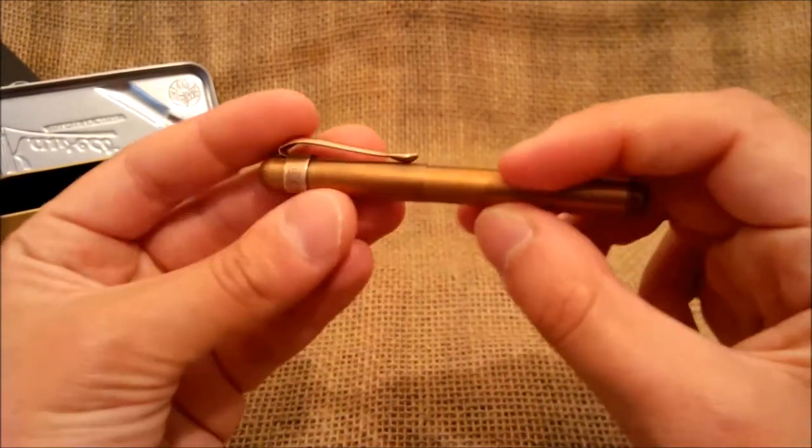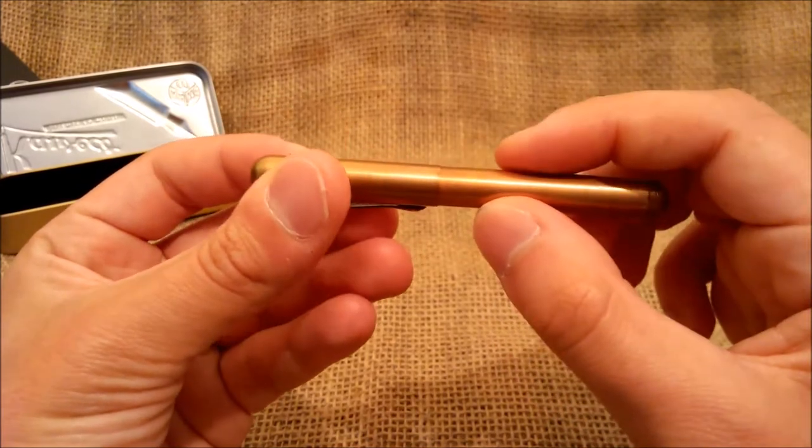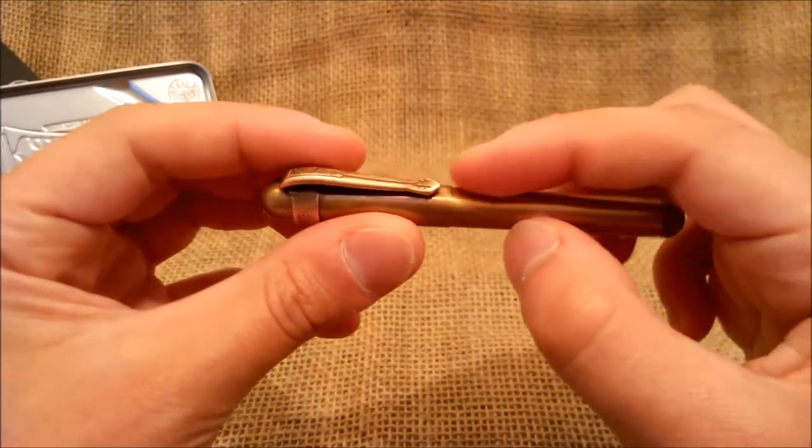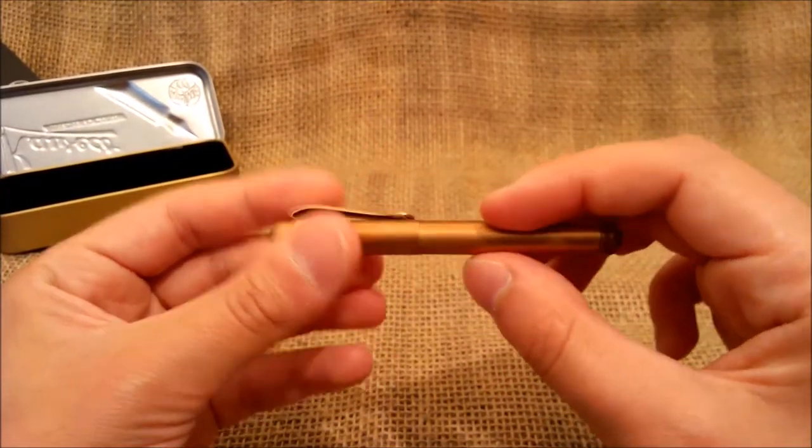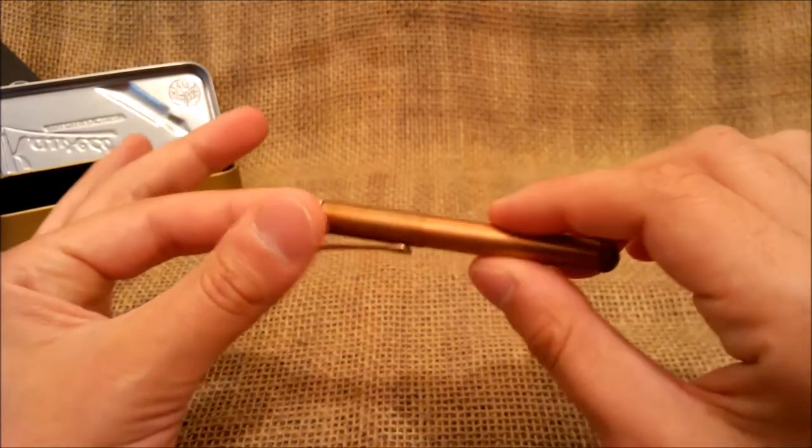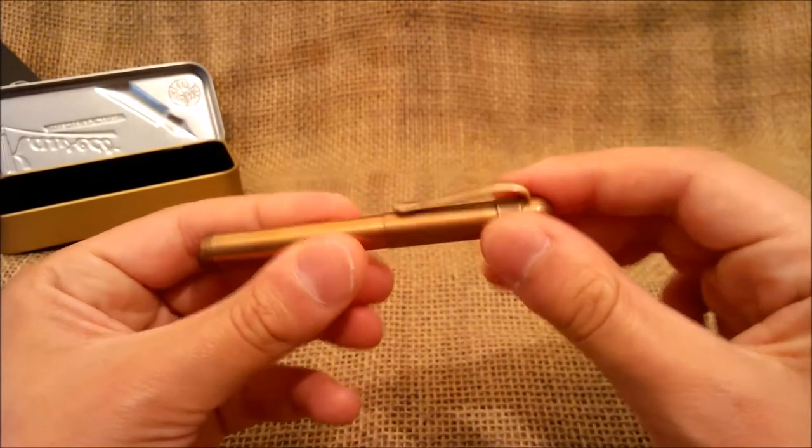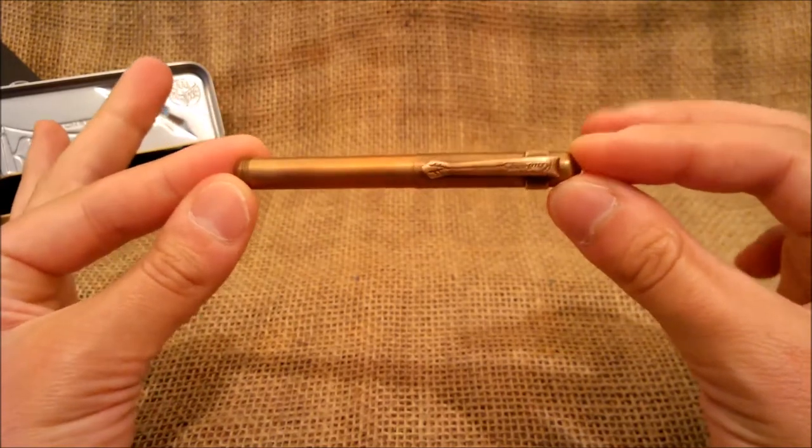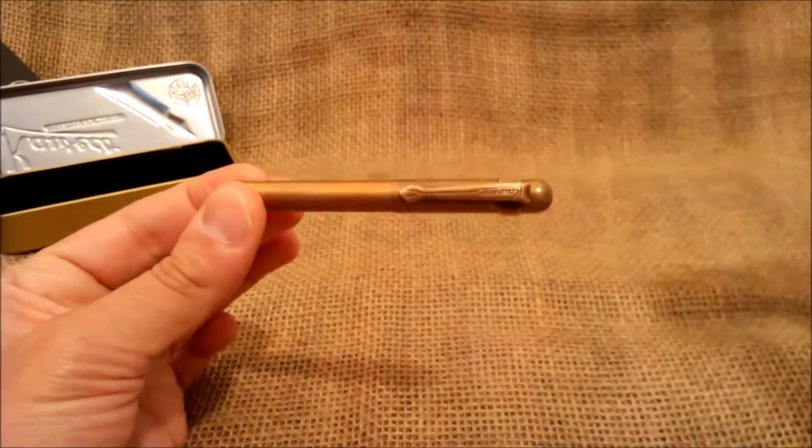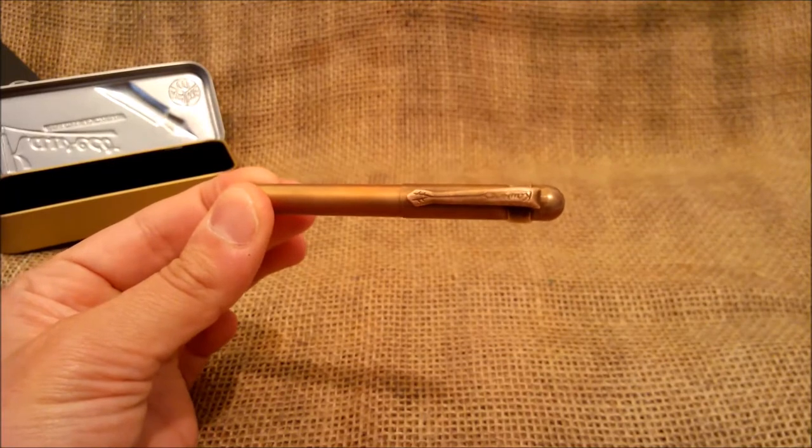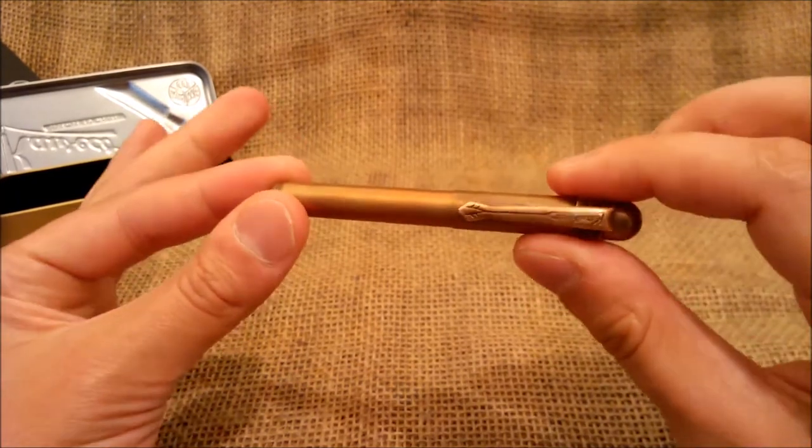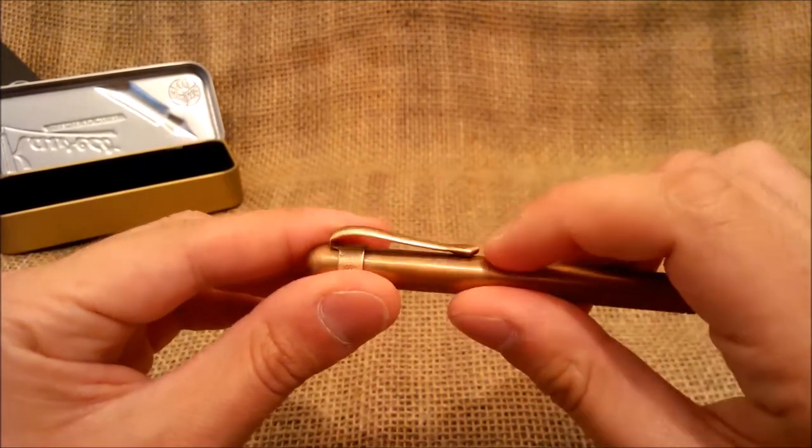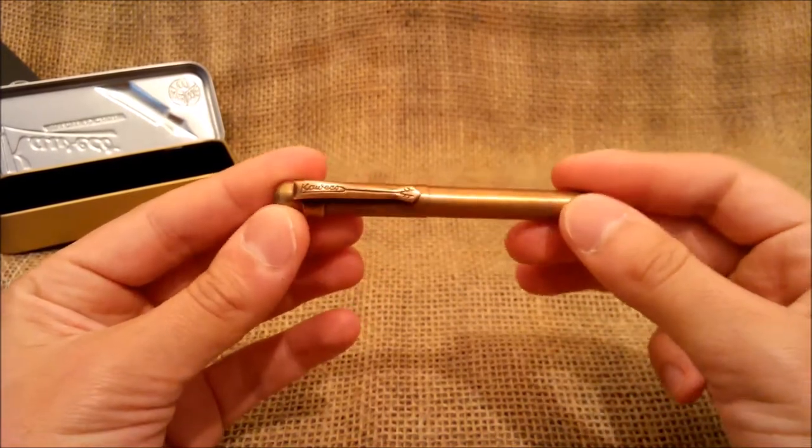As you can see the cap has a little step onto the barrel. But it's a very very small step under one millimeter I think. This additional Lilliput clip is a clip made specially for this pen. It is similar to the ones on the sport series but it's a special size for the Lilliput fountain pens. And it also acquired some patina meanwhile.